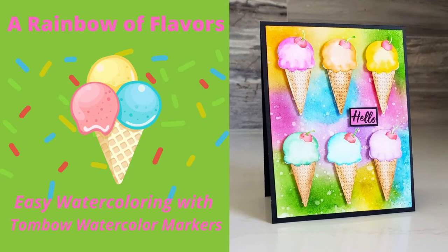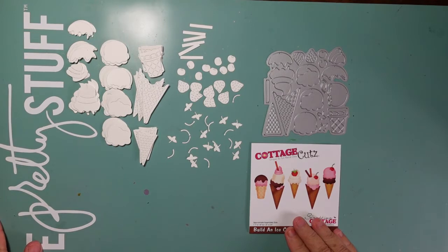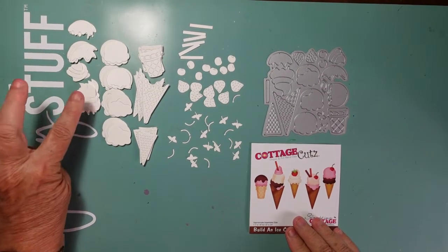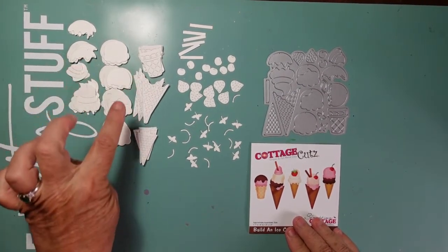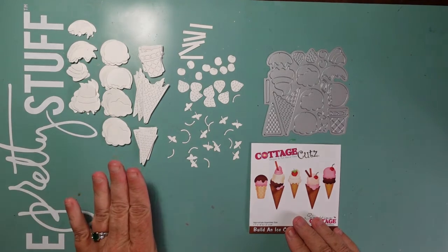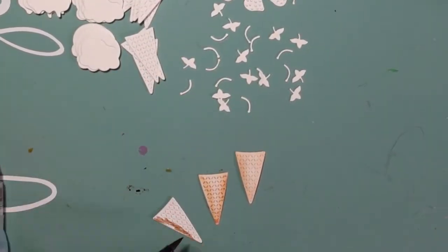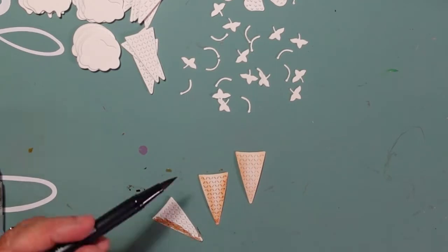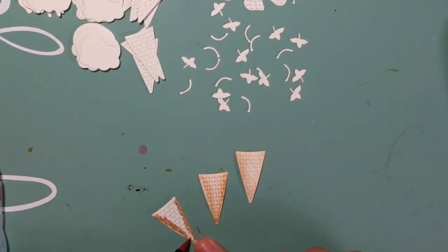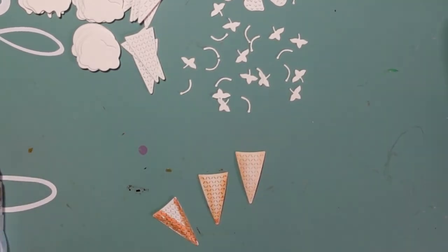Hi and welcome back for another Mad About Cards and Crafts YouTube video tutorial. Today's card features a rainbow of flavors using a new die available in the Cottage Cuts store called Build an Ice Cream Cone. I'm going to do a little bit of watercoloring, so I did cut out several of the ice cream cones. As you can see, this die builds several different styles of ice cream cones.